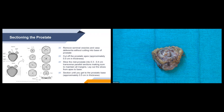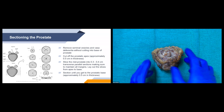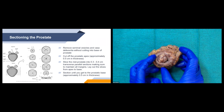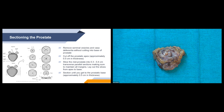To section these specimens, we start by removing the seminal vesicles and vasa deferentia without cutting the base of the prostate. Then we cut off the prostatic apex, keeping it about 0.5 centimeters in thickness, because we will be doing perpendicular sections. We then serially section the mid prostate in about 0.3 to 0.4 centimeter transverse parallel sections, as shown in the diagram, maintaining all margins on each slice. We lay out slices going from apex to base, sectioning until we reach the prostatic base, leaving it at 0.5 centimeters in thickness.